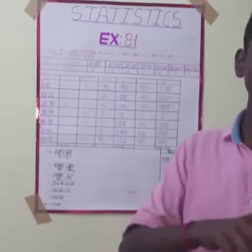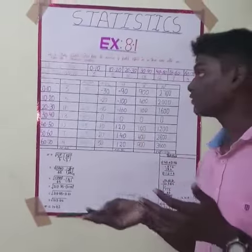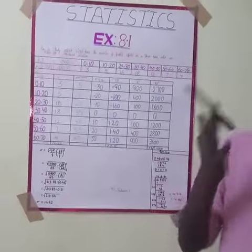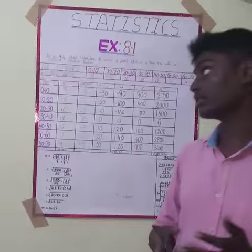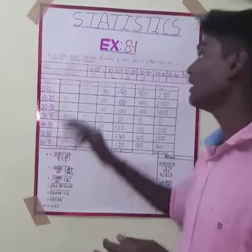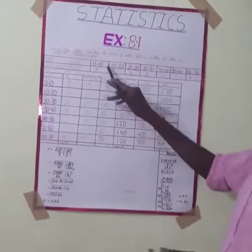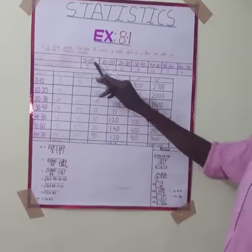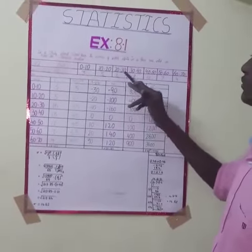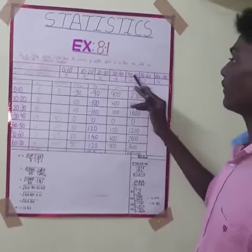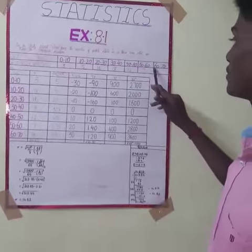In the age group, they are affected by the age group. The age groups are: 0 to 10, 10 to 20, 30 to 40, 40 to 50, 50 to 60.